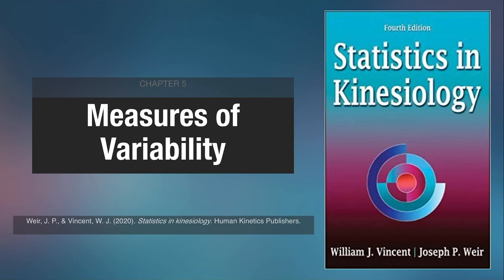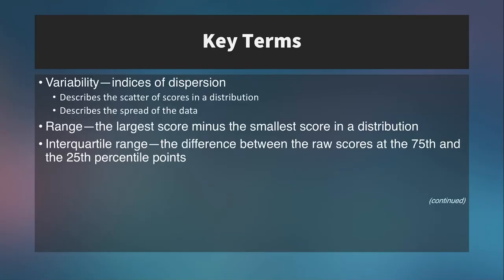This information can be found in the textbook Statistics of Kinesiology by Ware and Vincent. Now some key terms to go over first. Variability is an indice of dispersion. So essentially what we mean by dispersion is how closely grouped or how spread out are your scores. The wider that curve, the more spread out they are and the larger that variability indice will be.